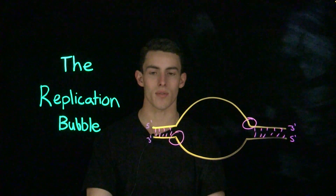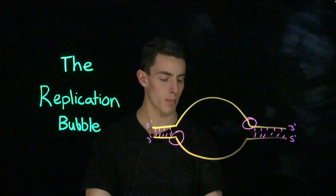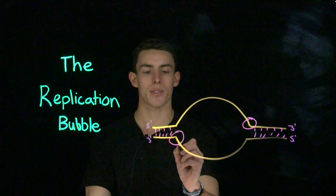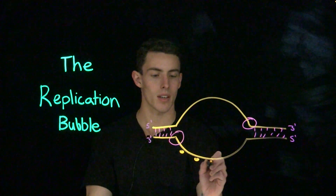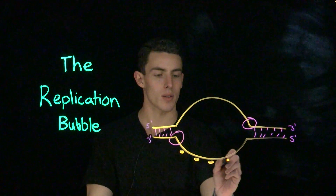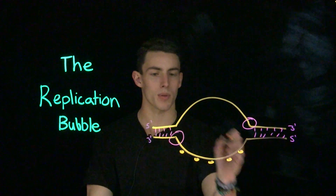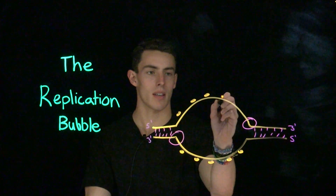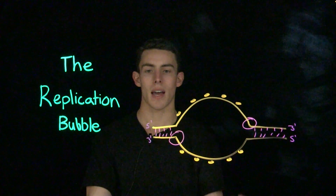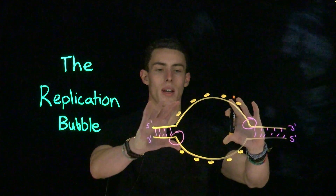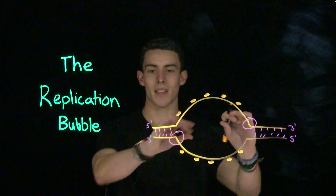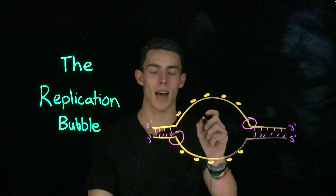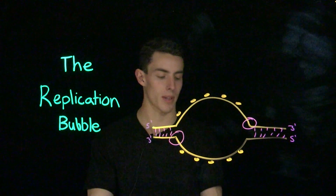In addition to this, there are a few more important proteins that we don't think about a lot. These are called single strand binding proteins. Single strand binding proteins will bind to each individual strand, as hinted in their name, and they will keep the strands from coming back together, thus allowing replication to happen within the replication bubble.